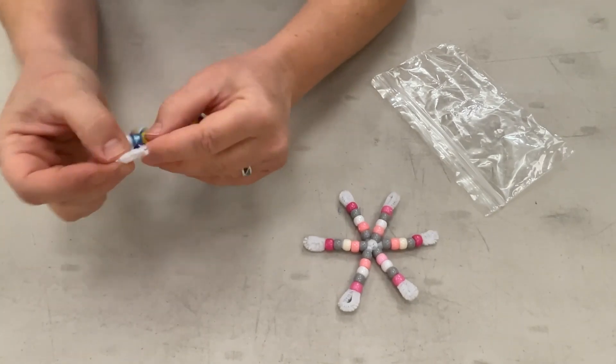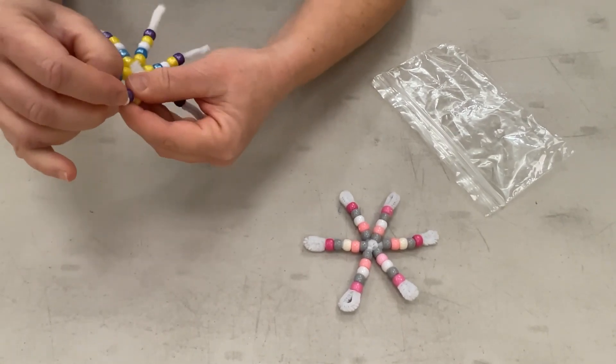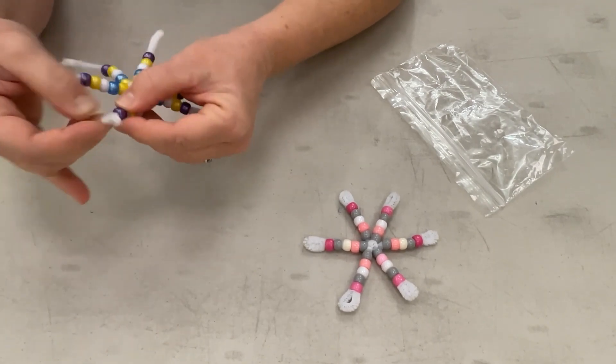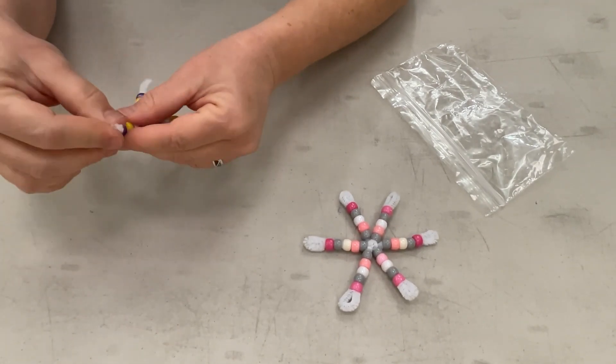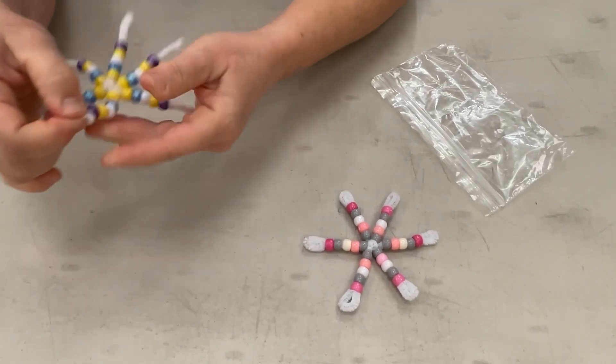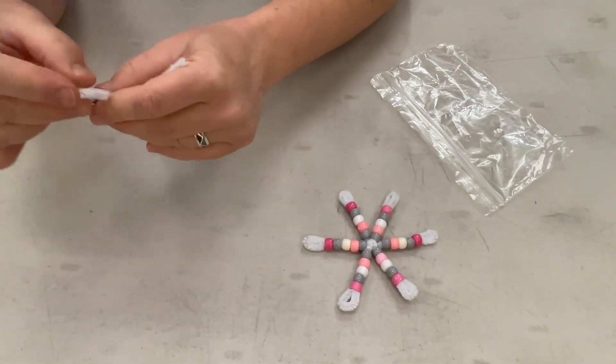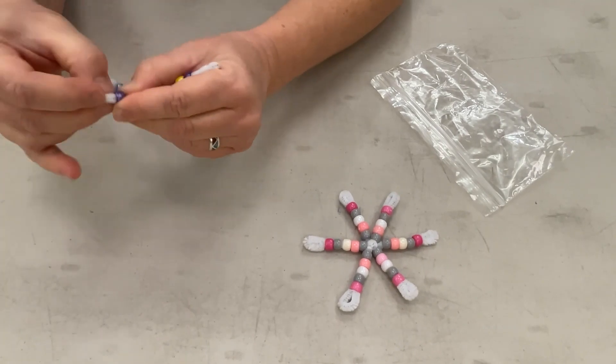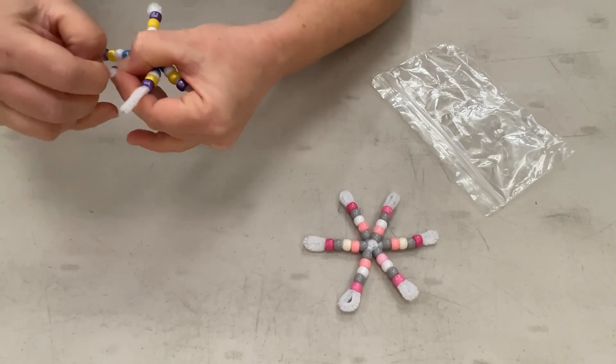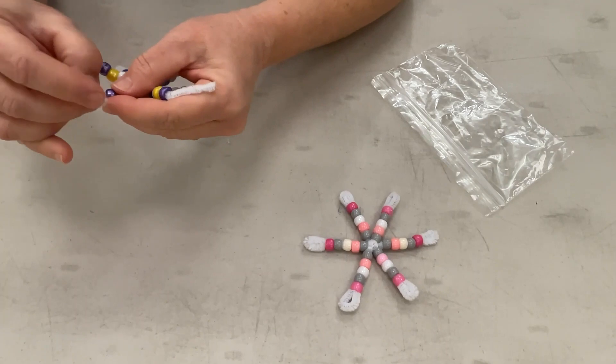So we'll go through each leg of the snowflake, turning the ends down and inserting into the beads. That one does not want to go. There we go. It was a little longer than some of the others. So we'll turn it under and insert into the bead. Turn under and insert. Turn under and insert. Two more legs to go.